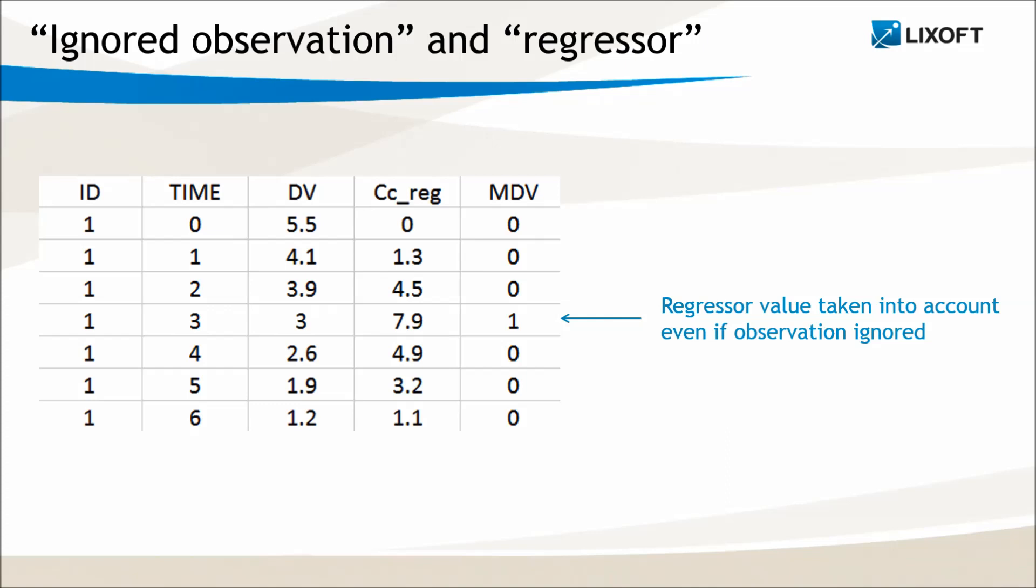And finally, if you have tagged a column as a regressor in the dataset, the regressor value on the lines will be taken into account even if I have a number one in an ignored observation column.